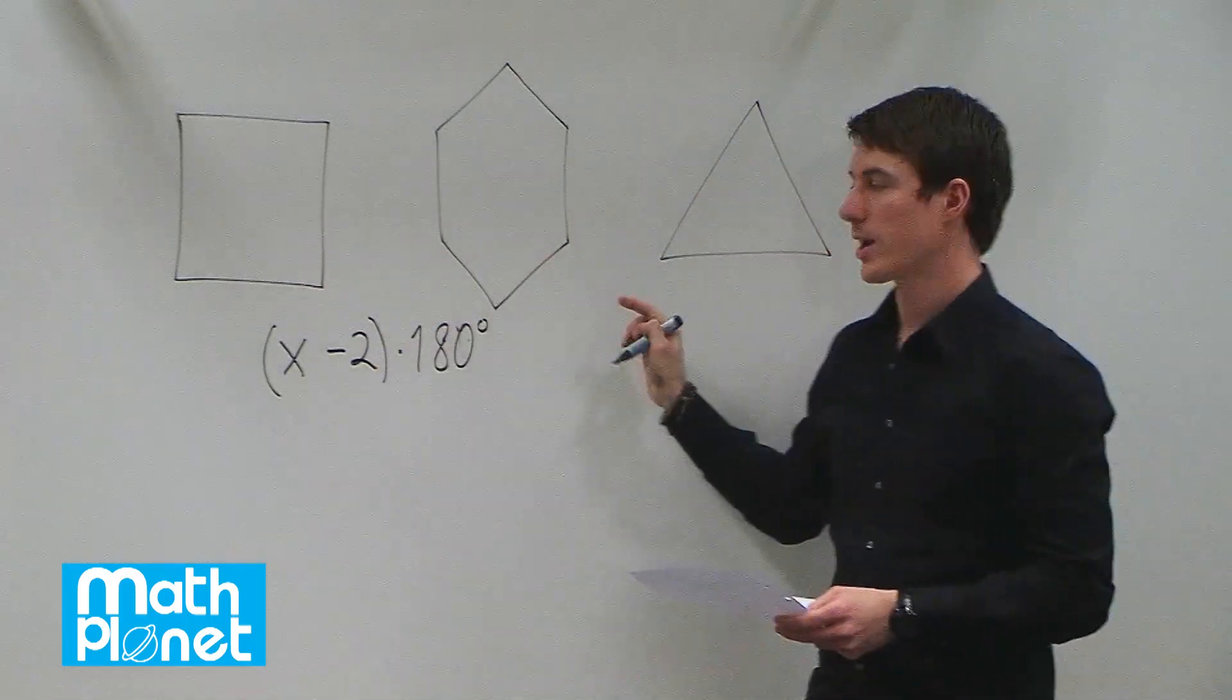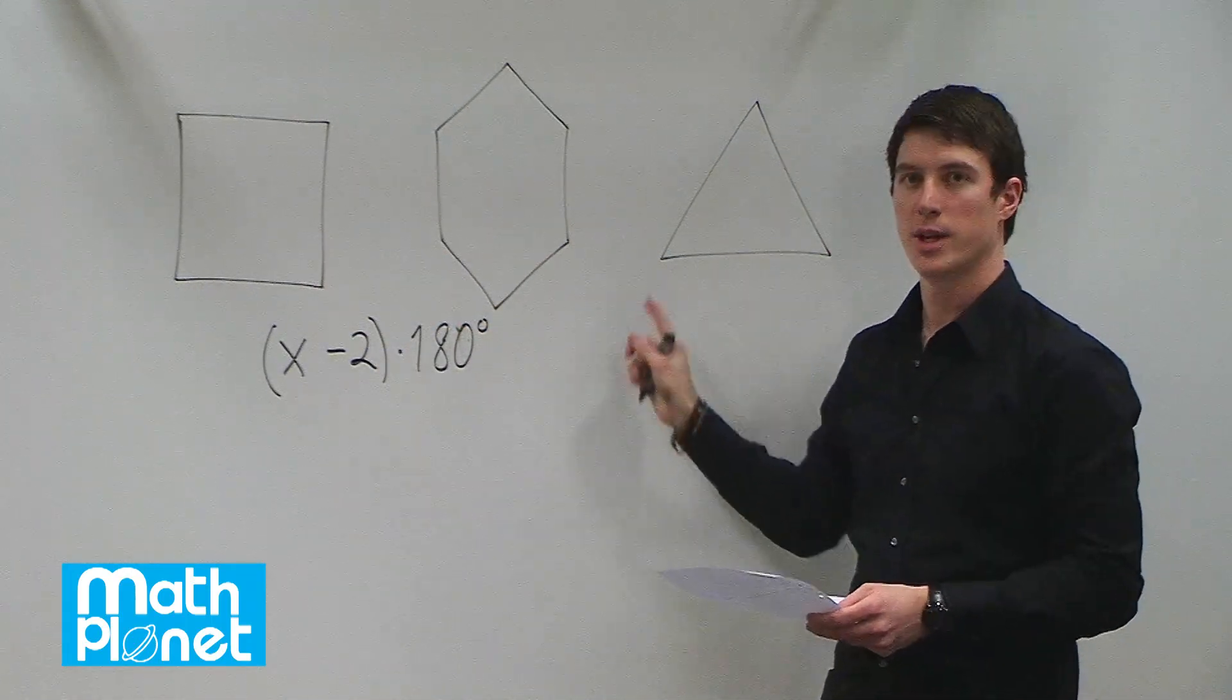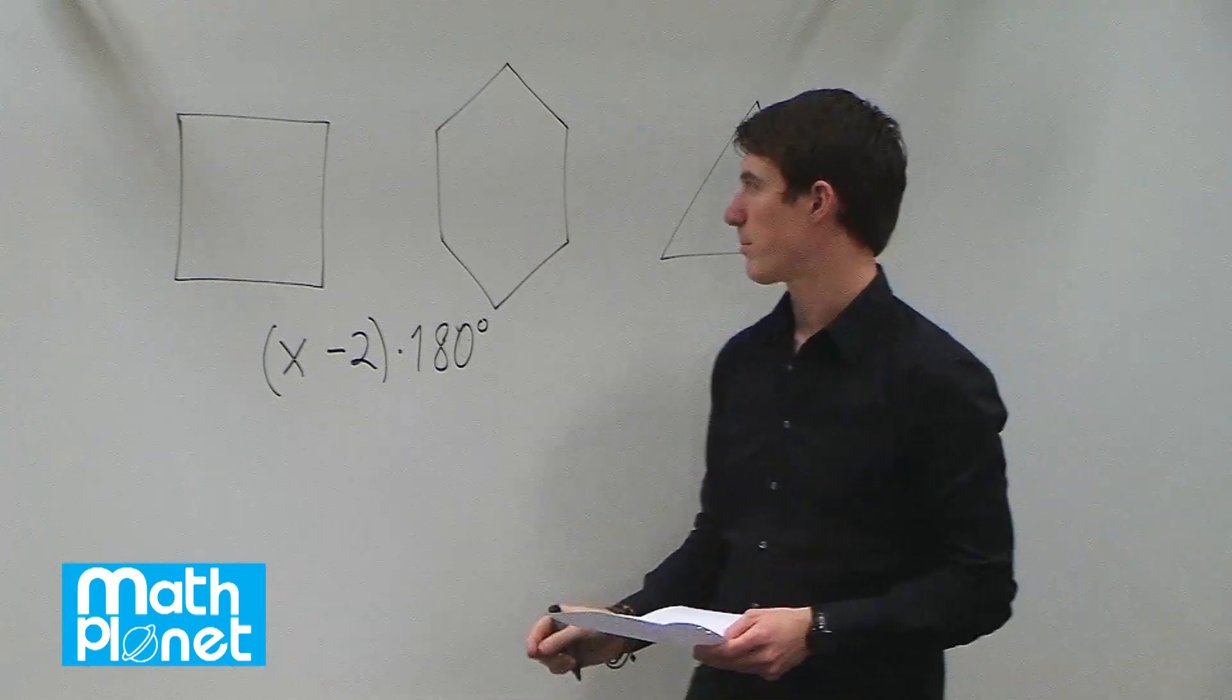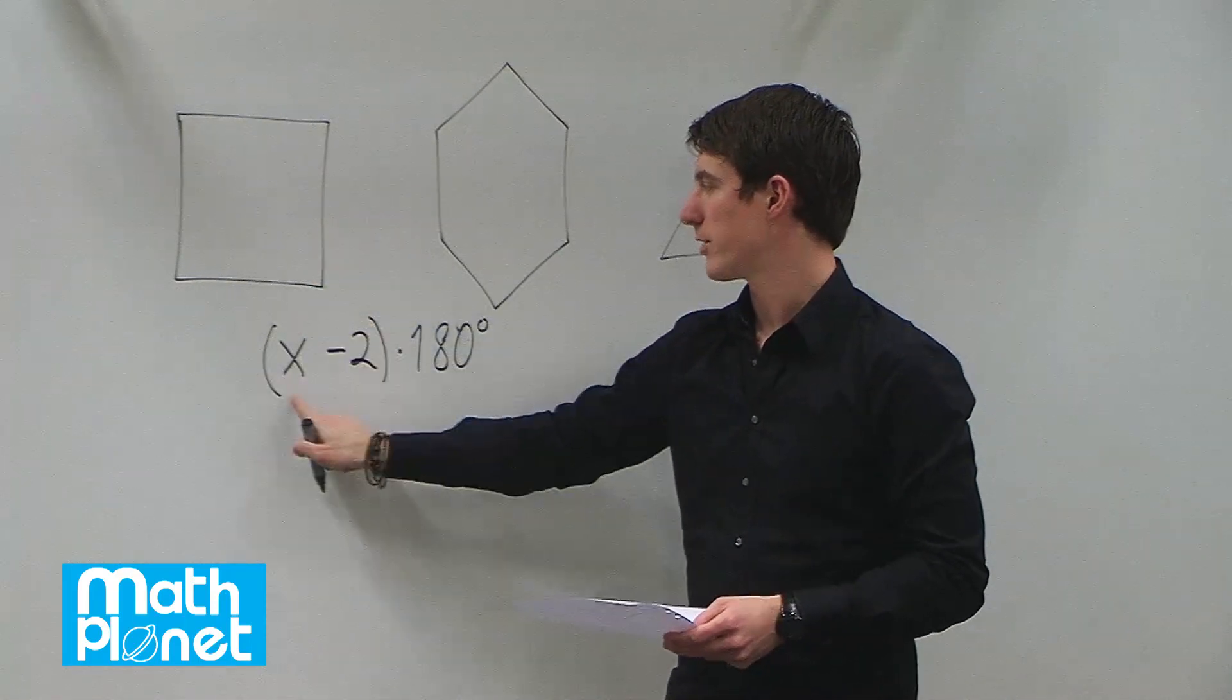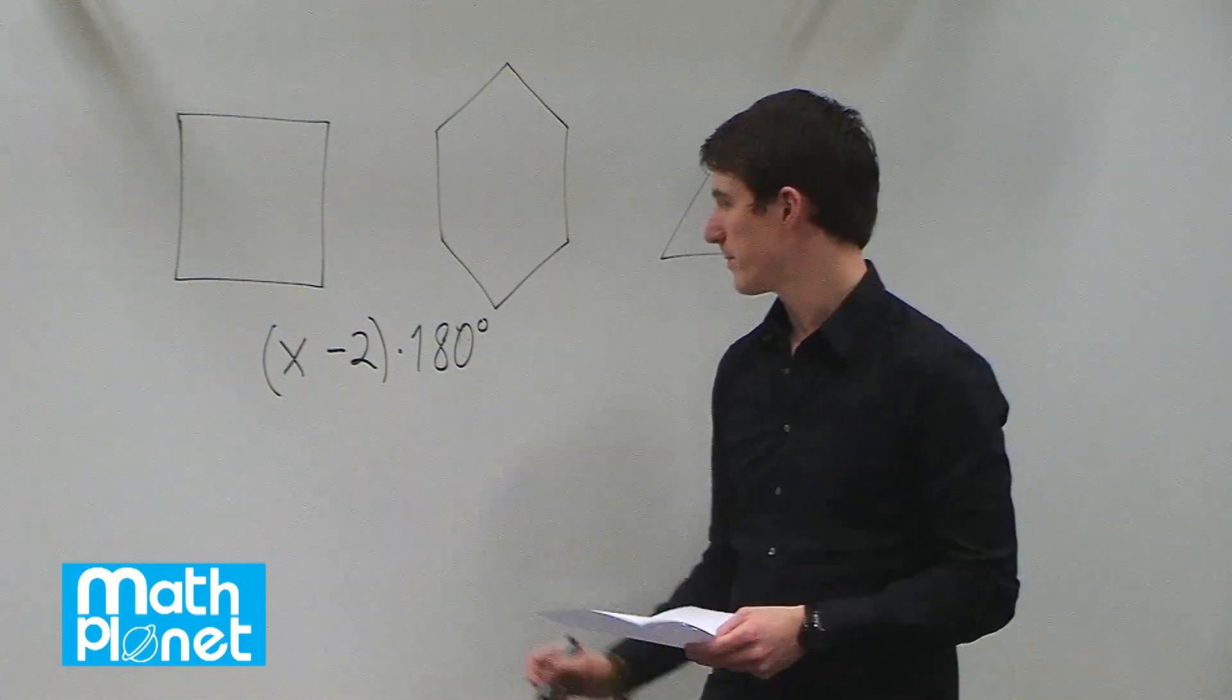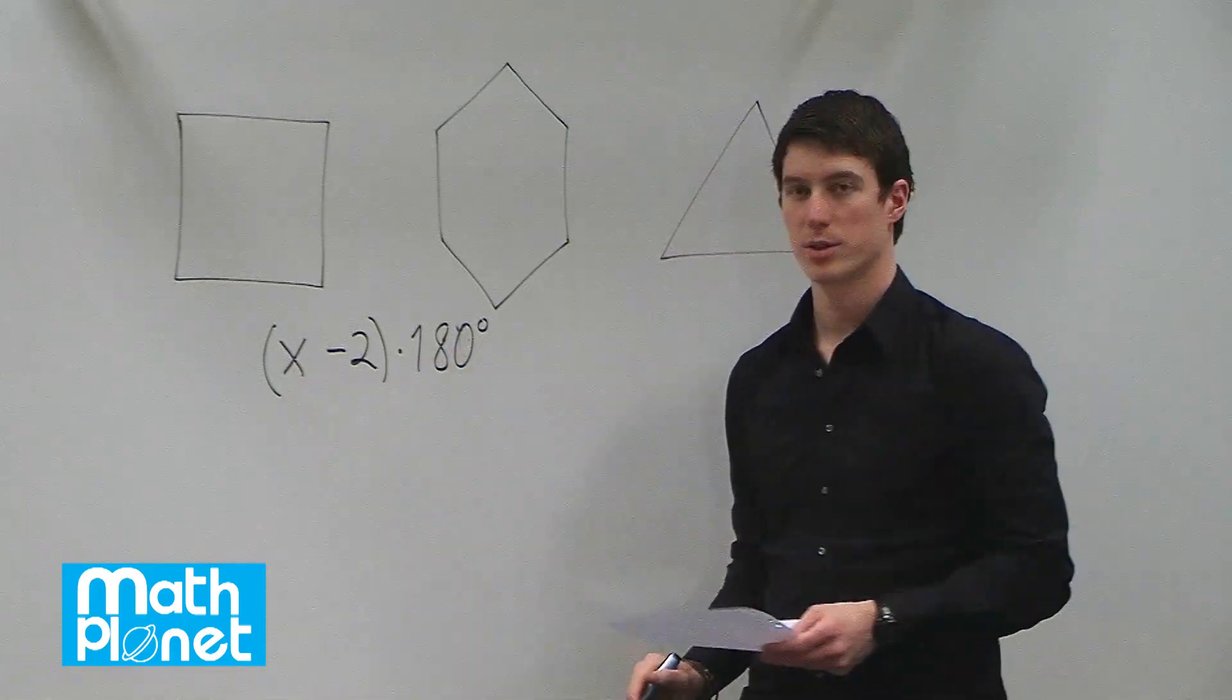So for each of these we can have a different number of total interior angles if we sum them up. So for a square the number of sides or angles is four. So we have four minus two times 180.